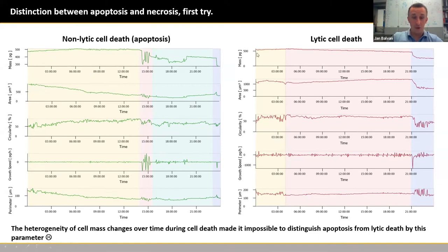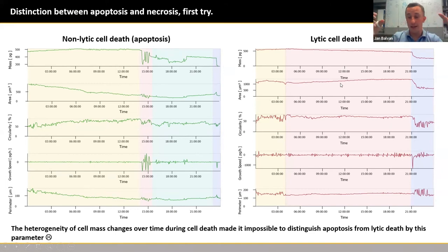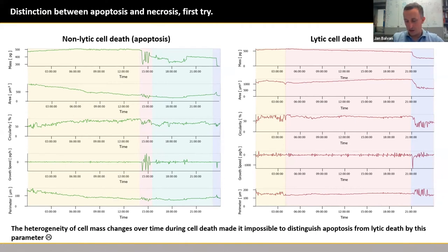Because we are in vitro and there are no professional phagocytes, the process of apoptosis ends by post-apoptotic or secondary necrosis. In the case of lytic cell death, there is some break point, after which the cell starts to decrease in cell mass and increase in area — the cell is swelling until the final event of plasma membrane rupture and massive release of cell mass into the extracellular space. Unfortunately, the heterogeneity of those curves for apoptosis and necrosis was too high, making distinction impossible.